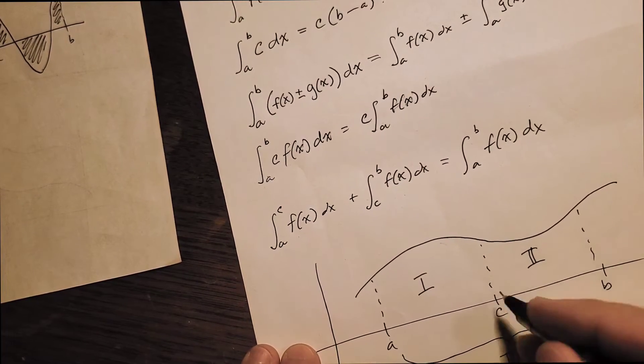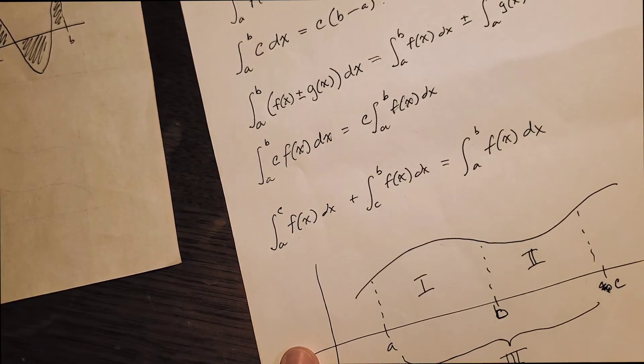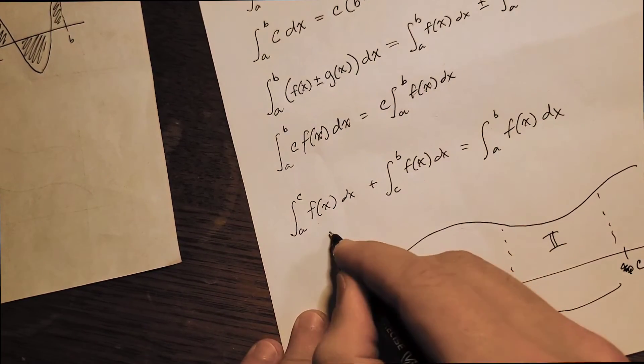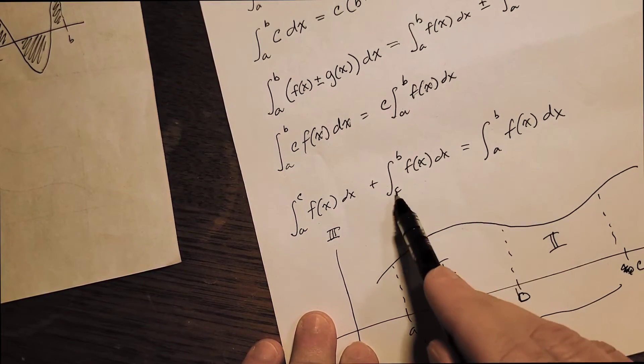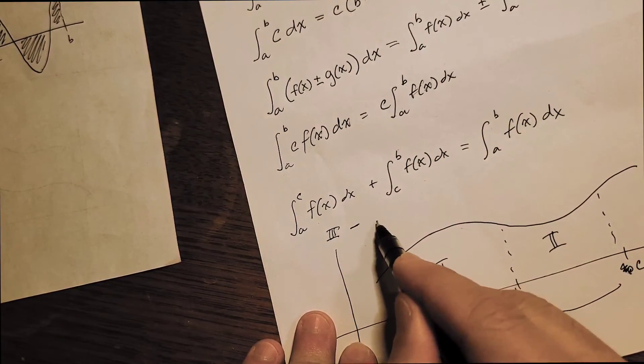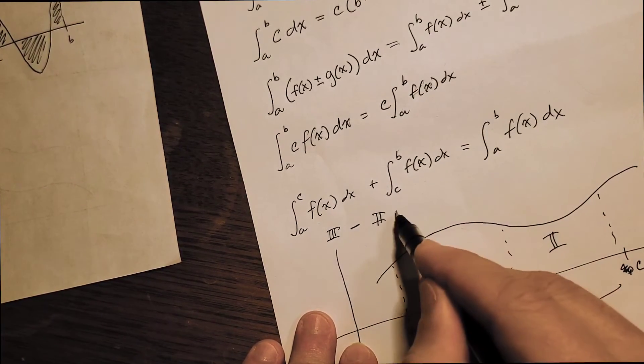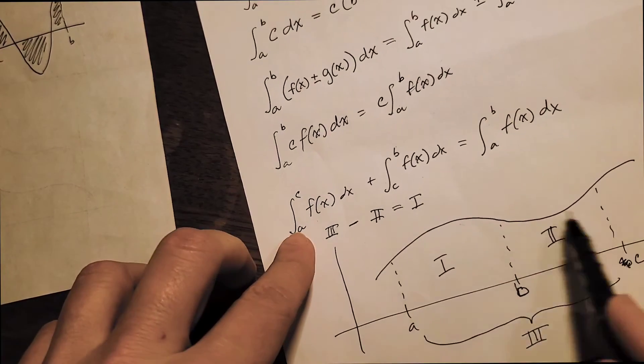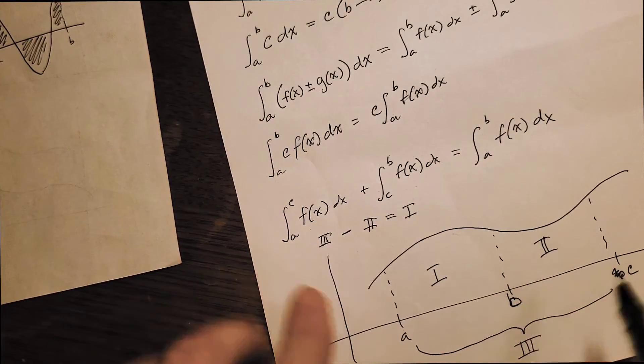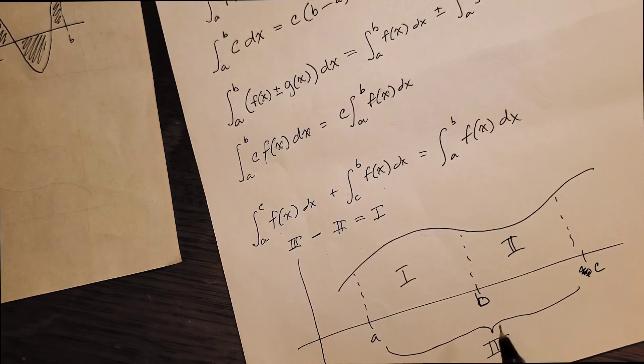Let's do one example where it's not in the easy order. What if I switch this to write b here and c here? Because nothing in this rule says c has to be in between. A to c is then region three. This integral is region three. C to b is region two, but done backwards. So it's going to be a minus region two. Then we have a to b, which is now region one. And we're looking at this. So the area of the whole thing minus the area of the top is equal to the area down here. So that gives you an idea of how this works out.